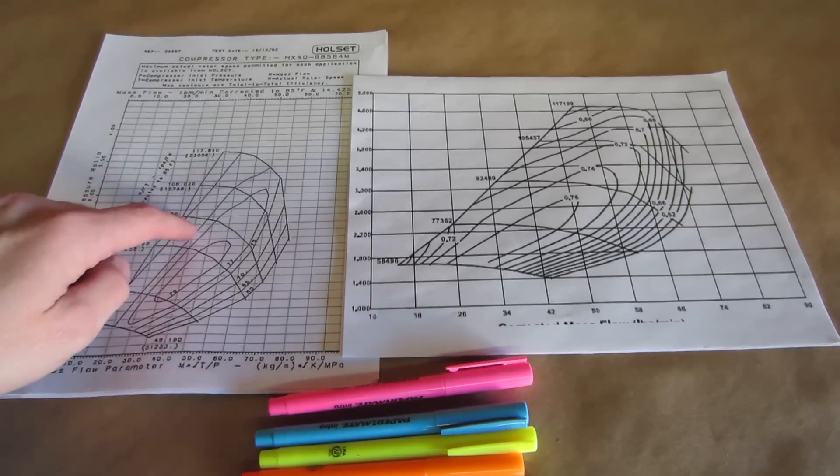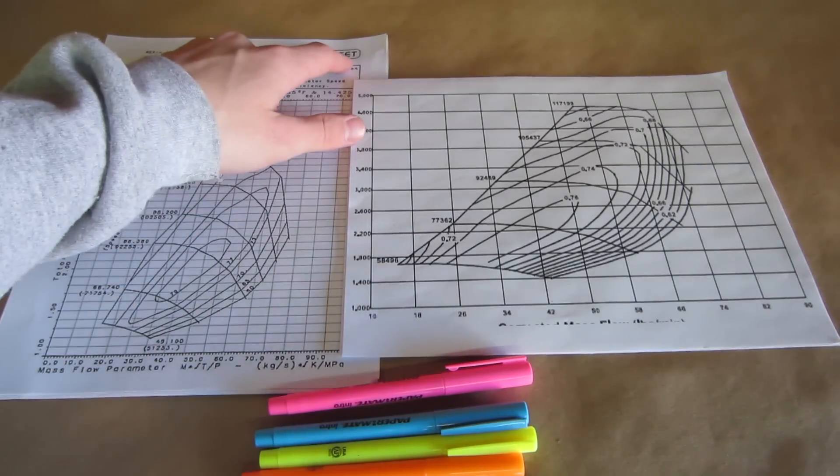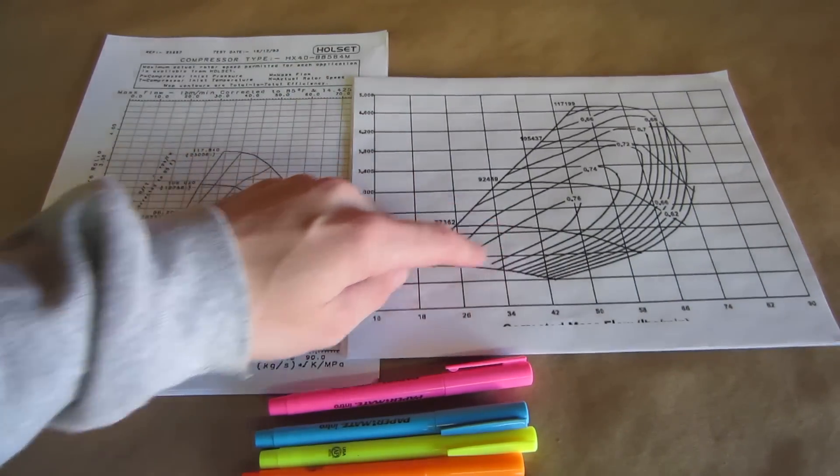Here are a few compressor maps. The map on the left belongs to a Holset turbo and the map on the right belongs to a BorgWarner turbo.